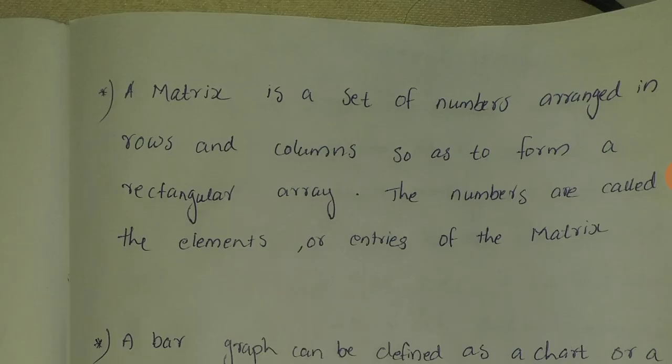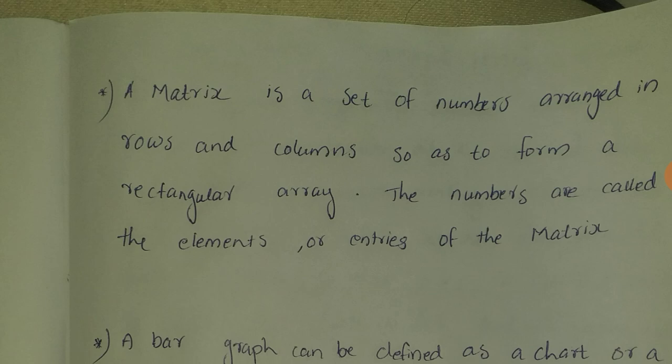If you are asked the question 'What is a matrix?', you can answer that a matrix is an arrangement of numbers in rows and columns forming a rectangular array.